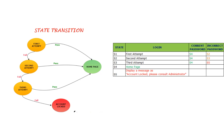From this state transition diagram we derive a table. S1 is the first attempt: if the correct password is entered, you transition to S4 (home page); otherwise you transition to S2. S2 throws an error and leads toward the account locked state. Remember: use decision tables when there are multiple input conditions or actions, and use state transition when there are multiple transitions between states.